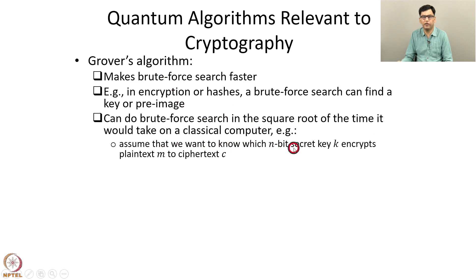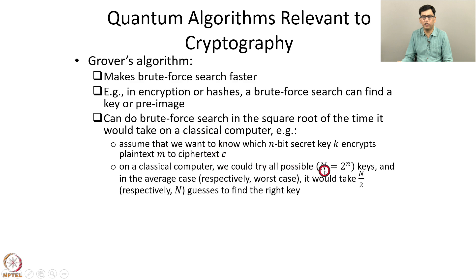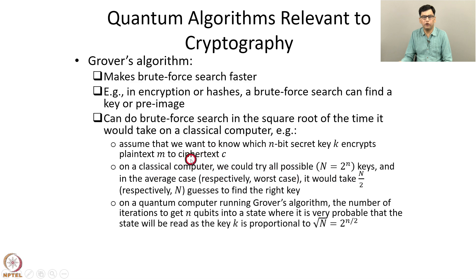Assume that we want to know which n-bit secret key k encrypts plain text m to ciphertext c. On a classical computer, we could try all possible keys. There are N equals 2 to the power n possible keys, since the secret key is n bits in length. On a classical computer, in the average case it would take N over 2 guesses to find the right key, and in the worst case it would take N guesses — so the time required is of the order of 2 to the power n. But on a quantum computer running Grover's algorithm, the number of iterations to get n qubits into a state where it is very probable that the state will be read as the key k is proportional to only the square root of N, that is 2 to the power n over 2. Hence the amount of time required is reduced.